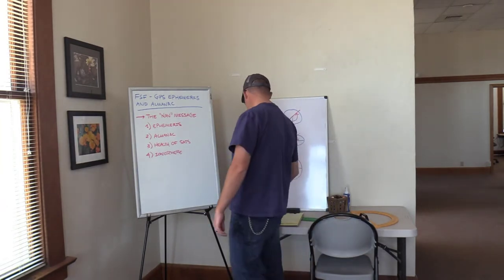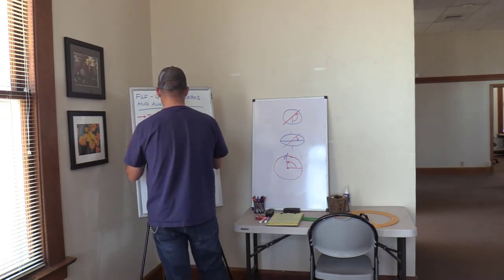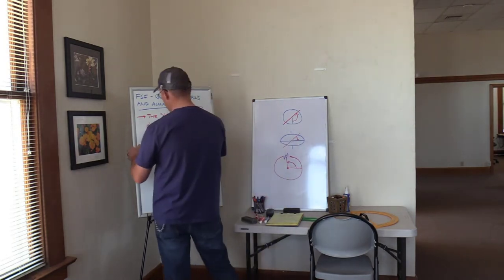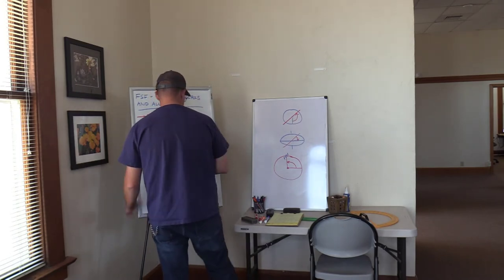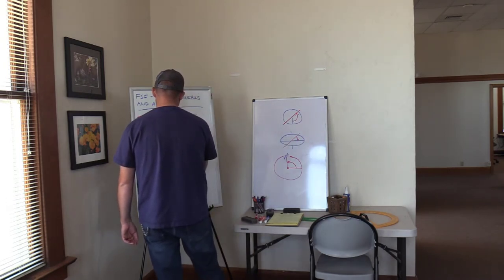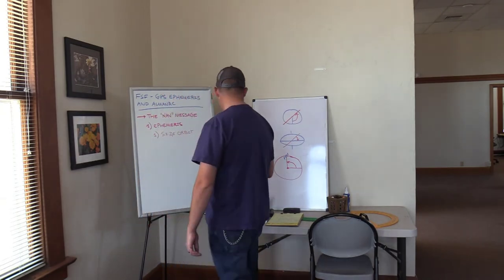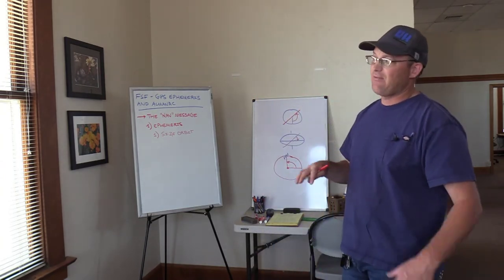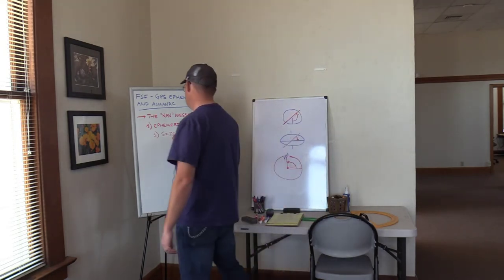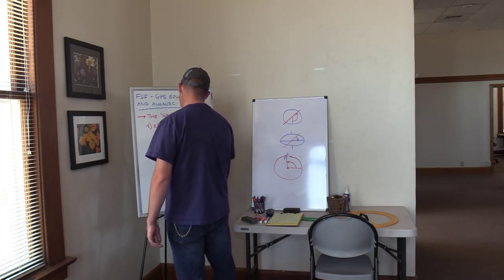The almanac and the ephemeris are fairly similar — both provide information on the location of the satellites. The ephemeris has six parameters. The first is the size of the orbit for each satellite. The orbits around the Earth are ellipses, not perfect circles, because of gravity and the Earth's bulge at the center. To describe the orbit size, they give you the length of the semi-major axis, which is the long axis of the ellipse.